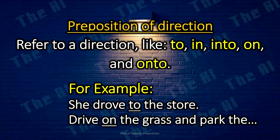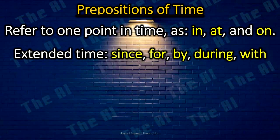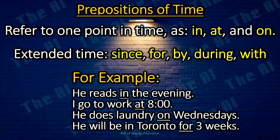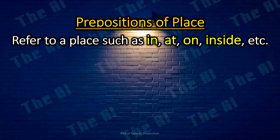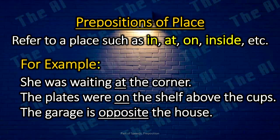Prepositions of time refer to one point in time using in, at, and on. We also use other prepositions such as since, for, by, during, and with to refer to extended time. For example: He reads in the evening. I go to work at eight o'clock. He does laundry on Wednesdays. He will be in Toronto for three weeks. Prepositions of place refer to a place, such as in, at, on, and inside. For example: She was waiting at the corner. The plates were on the shelf above the cups. The garage is opposite the house.